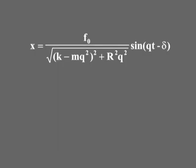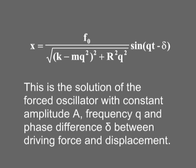Substituting amplitude A into equation 4, we get the displacement: x = F₀ / √[(k − mq²)² + R²q²] · sin(qt − δ). This is the solution of the forced oscillator with constant amplitude A, frequency q, and phase difference δ between the driving force and displacement.